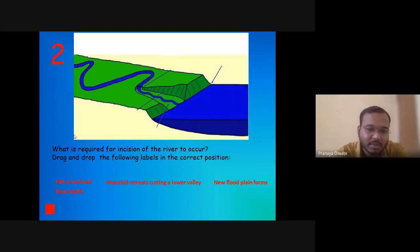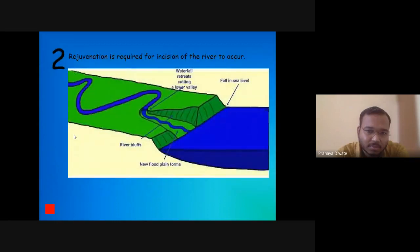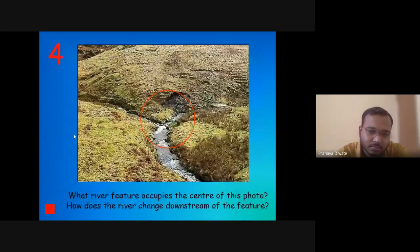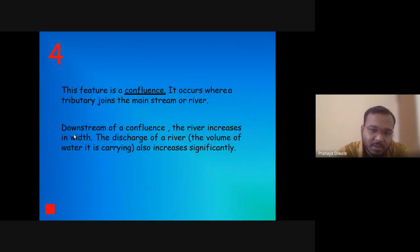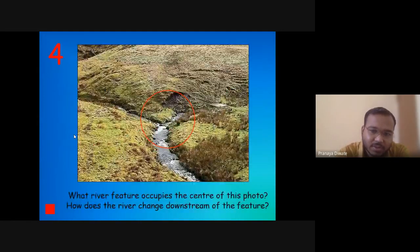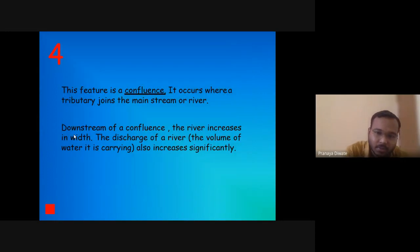What is required for incision of the river? Rejuvenation is required for incision of the river. What river feature occupies the center of this photo? How does the river change downstream? This feature is a confluence — it occurs where a tributary joins the mainstream of the river. Large rivers like the Ganga, Brahmaputra, and Mahanadi do not come from a single source; many tributaries join together at confluence points.